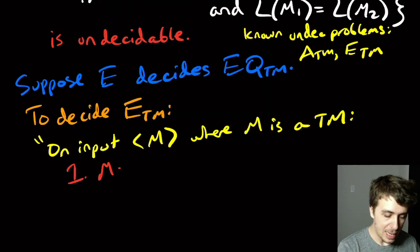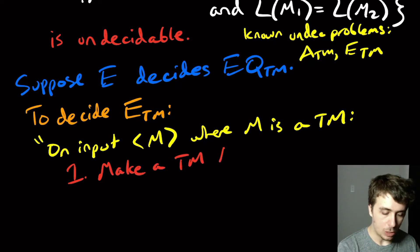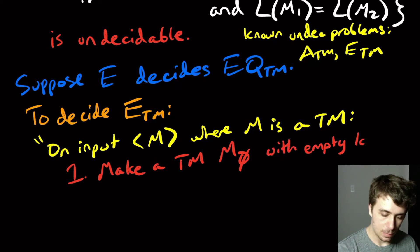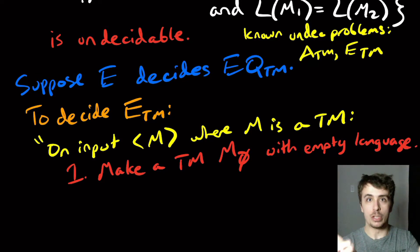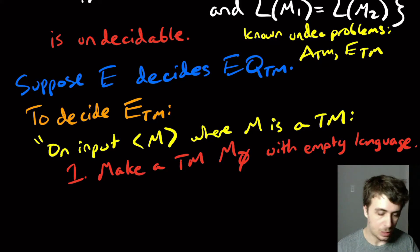is to make a Turing machine, which I'm going to call M sub empty, with empty language. That's really easy to do. You can just have a Turing machine that always goes to the reject state, or even has the start state being the reject state. That's one thing you can do.